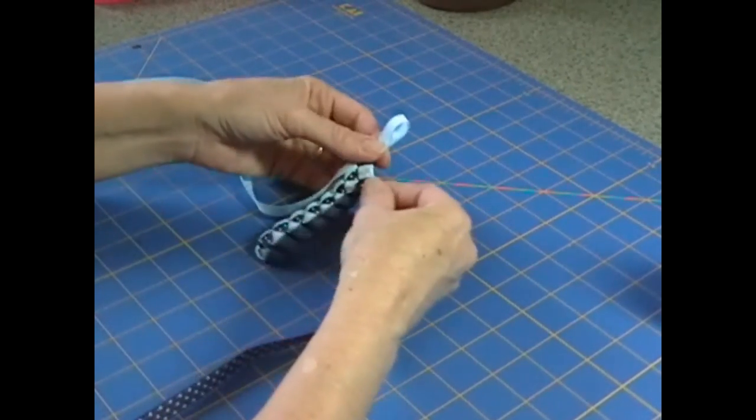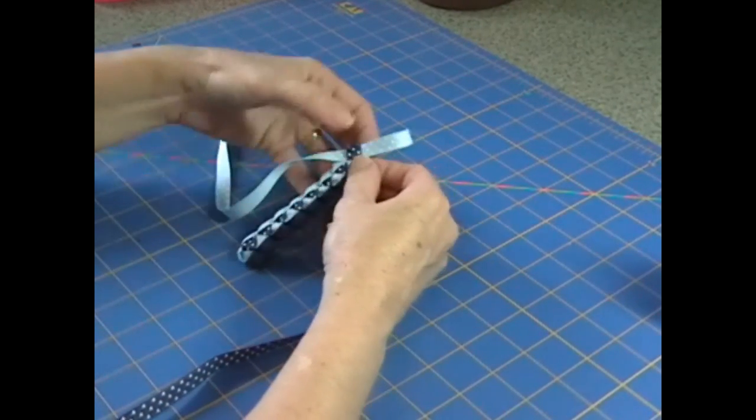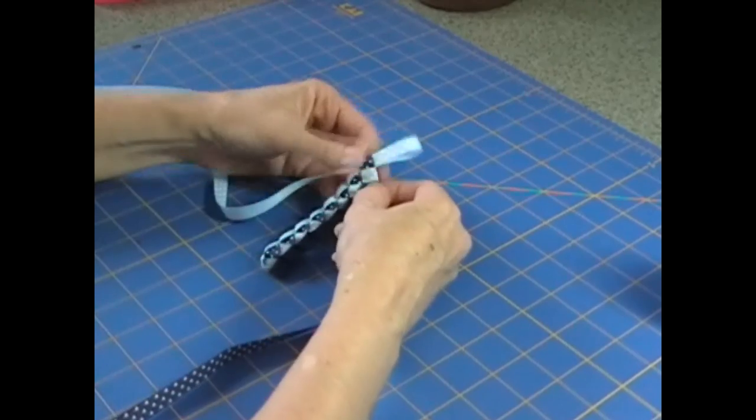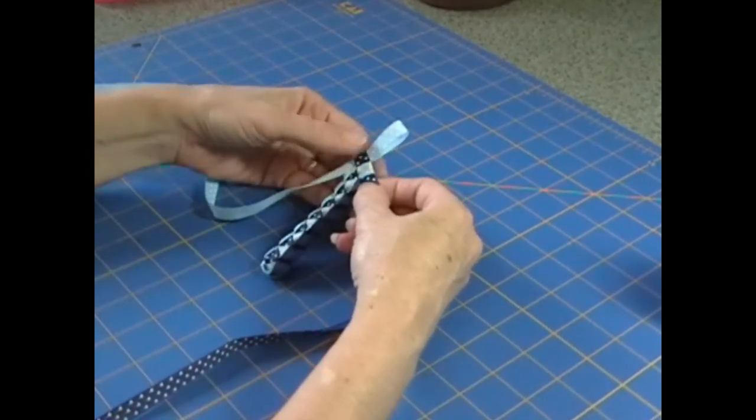So you would just keep going back and forth until you get to the length that you want. So we're going to pretend that we have the length that we want now because I want to show you how to finish off. And you don't want to sit here and watch me weave for 20 minutes.